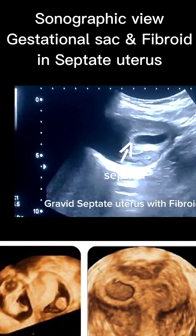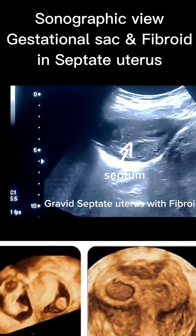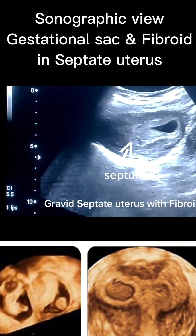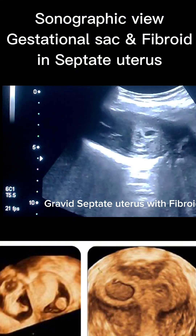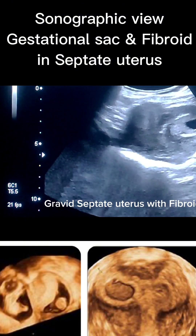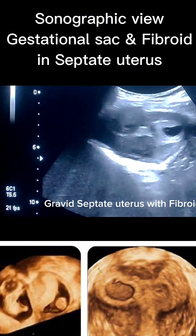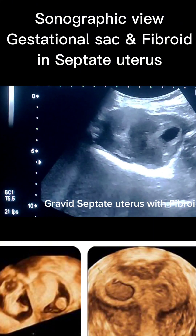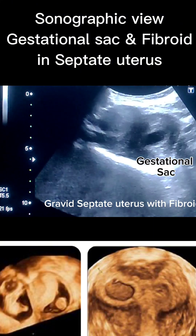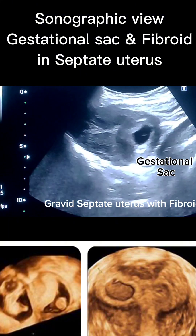The gestational sac was located in the left horn of the uterus, confirming that implantation occurred within the endometrial lining. The sac appeared regular and eccentrically placed within the horn, consistent with a normal implantation within a septate uterus.